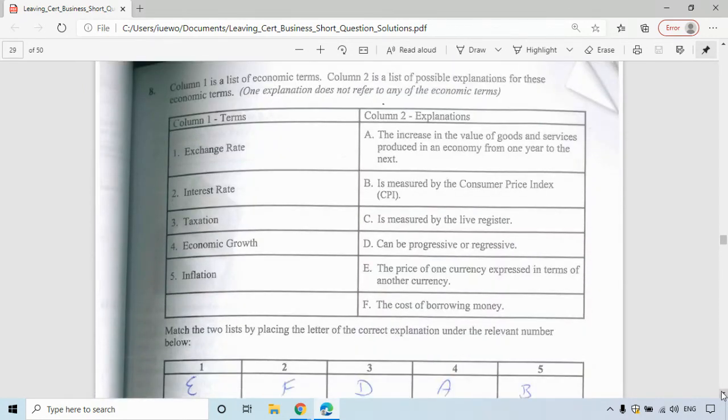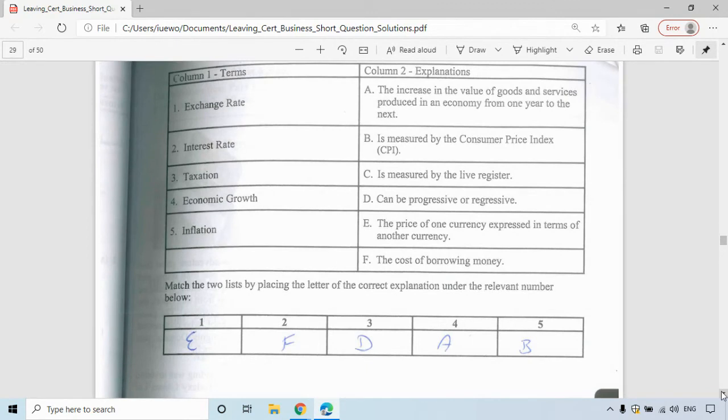Question eight, you've got to match the correct term to the correct explanation. The exchange rate is E, the price of one currency expressed in terms of another currency. Interest rate is F, the cost of borrowing. That may also be a savings related term as well, but for this question, it's the cost of borrowing money. Taxation, that is D, so it can be progressive or regressive. Economic growth is A, the increase in the value of goods and services produced in the economy from one year to the next. And inflation is B, so it's measured by the consumer price index.